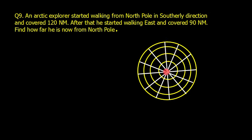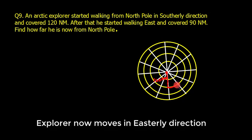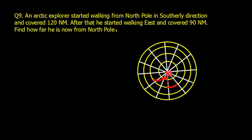This is the North Pole. The arctic explorer starts walking south for 120 nautical miles, so the explorer comes here. Then they start walking east, which means this fellow has to travel along the parallel of latitude because he is moving in the eastern direction.